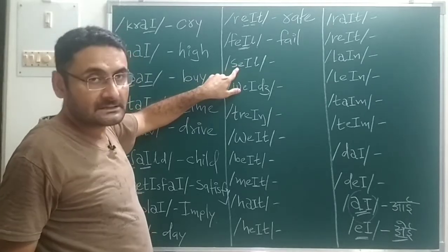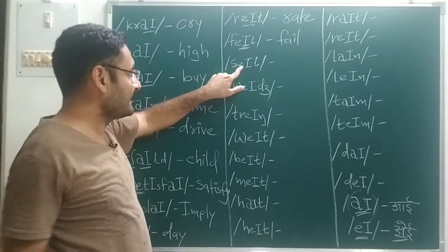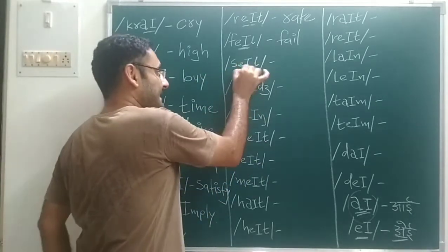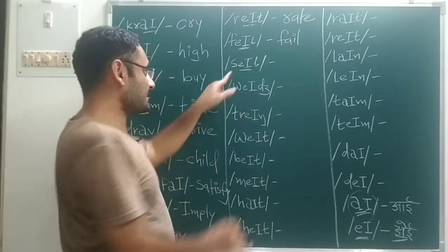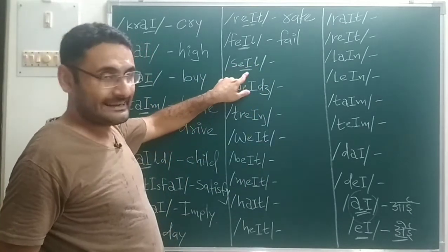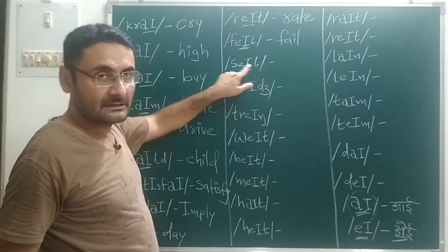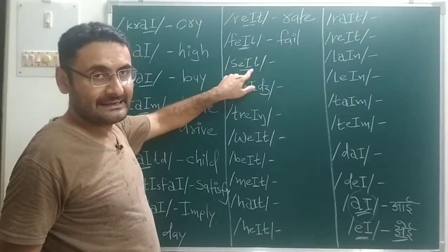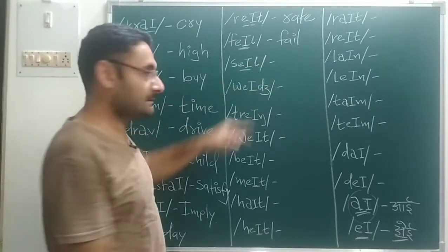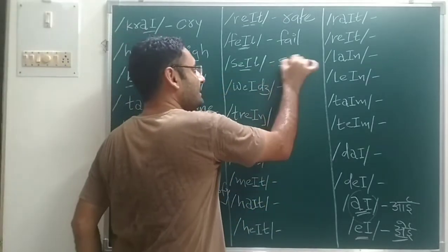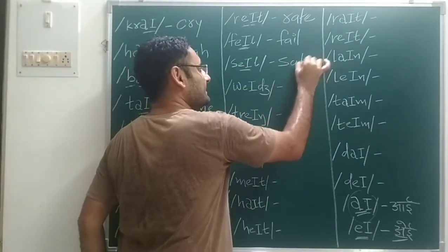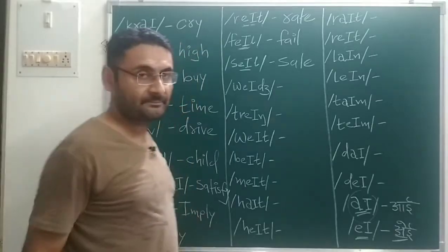Next: S sound, A sound — S, A, L — working through: S, A, L — that gives us 'sale'.